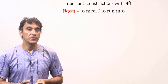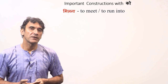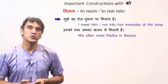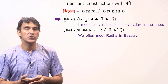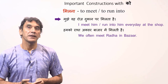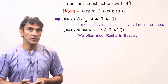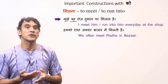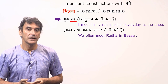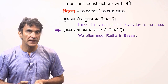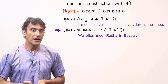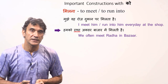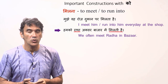Let's now take milna with the meaning of to meet, to run into. Again, the subject will take the postposition ko and the verb will agree with the object. Mujhe wo roj dukaan par milta hai — I meet him, I run into him every day at the shop. The subject main is with the postposition ko — mujhe — and the object wo is masculine singular, so the verb takes milta hai. Hum ko radha aksar bazaar mein milti hai — We often meet Radha in the bazaar. Hum takes the postposition ko and Radha, who is the logical object, dictates the verb. Radha is feminine singular, so milti hai.